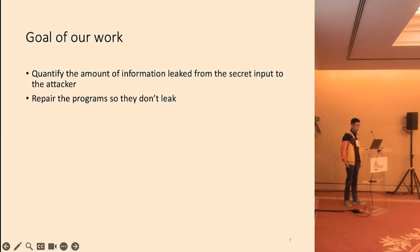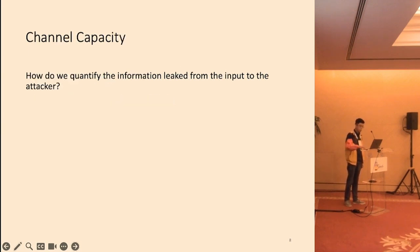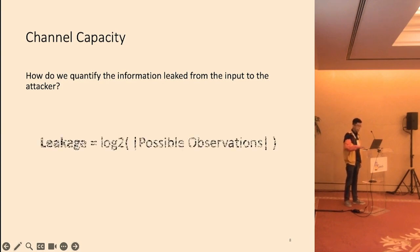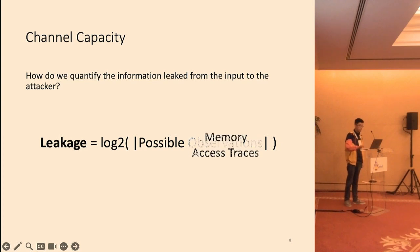The goal of our work is to quantify the amount of information leaked, and also to repair the program so they don't leak. To quantify leakage, we use an information theoretical measure called channel capacity. It is defined as log2 of the number of all possible observations. In our case, it is log2 of the number of possible memory access traces the program can induce.